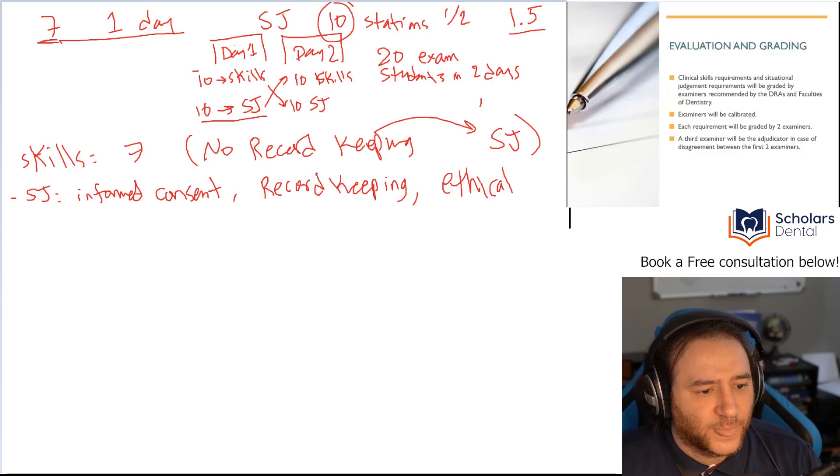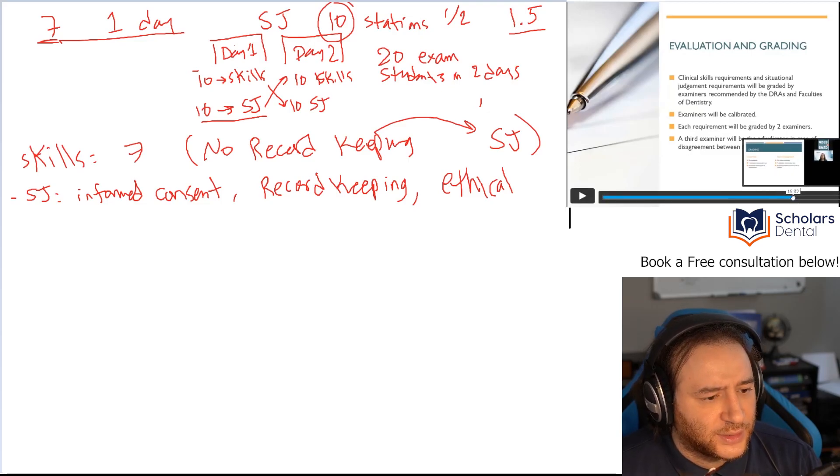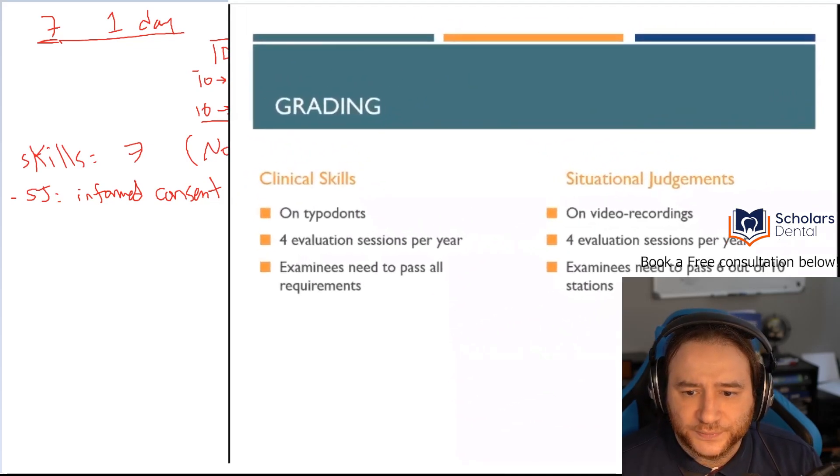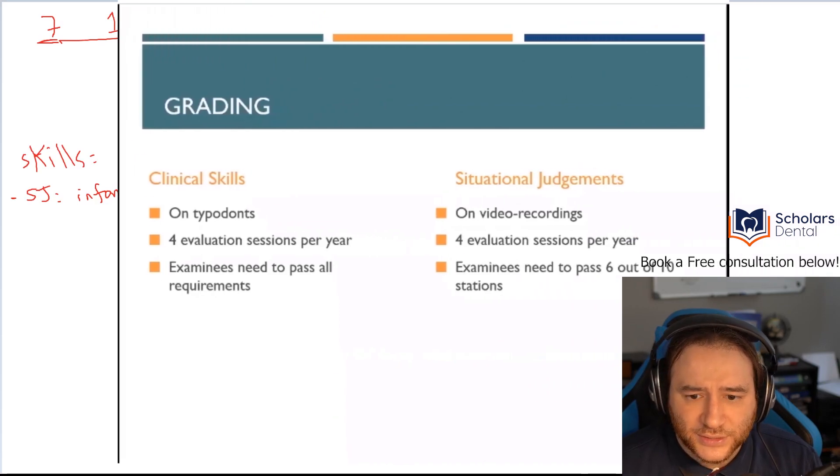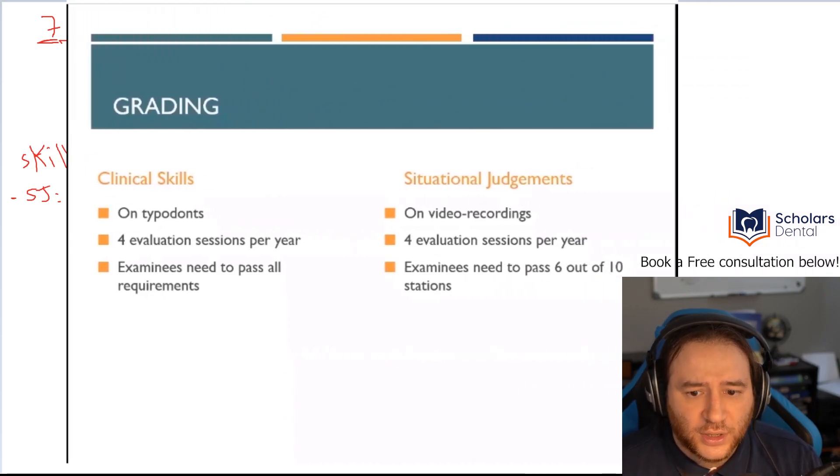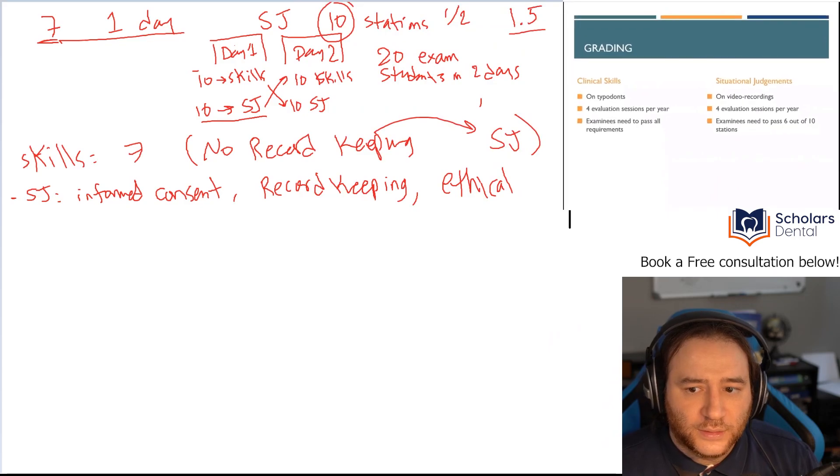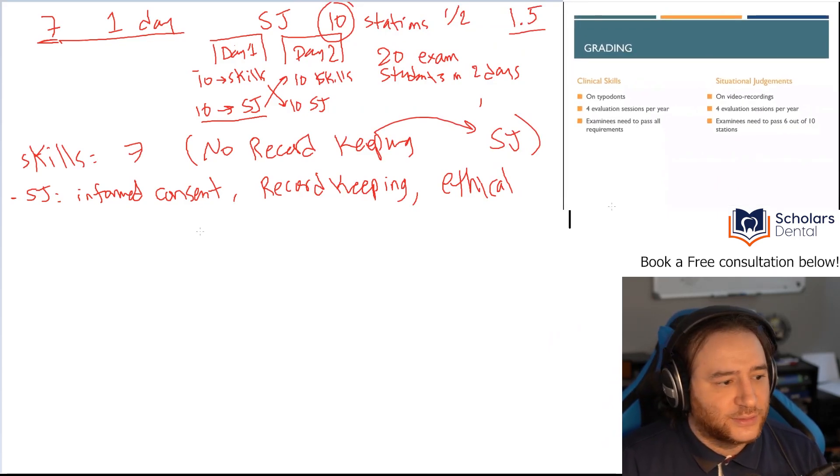Then you have 16 and 30, I'm going to go to that time and talk about what they showed here. Grading the clinical skills and the judgment. The skill is going to be graded on typodonts, obviously. It's going to be four evaluation sessions per year, and you have to pass all requirements. That is quite the new thing here. Let's spend some time on this.